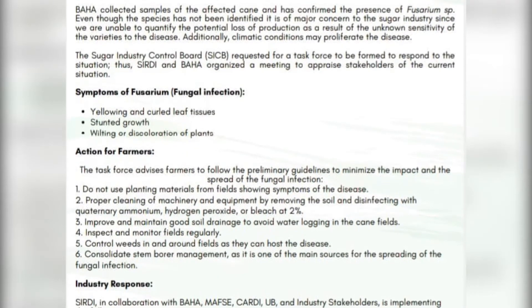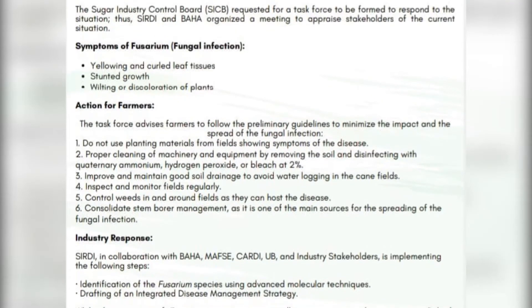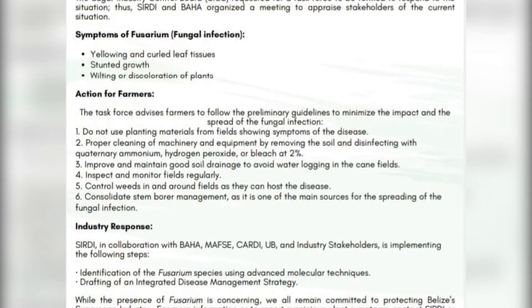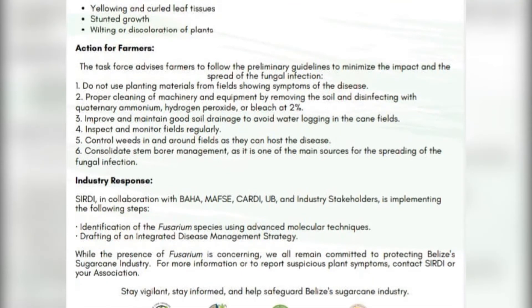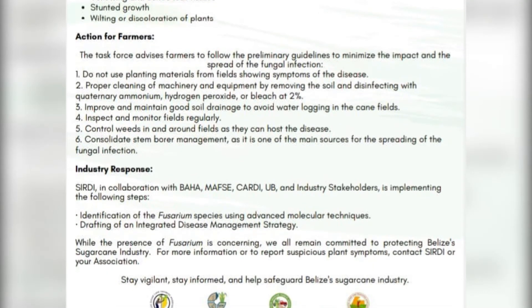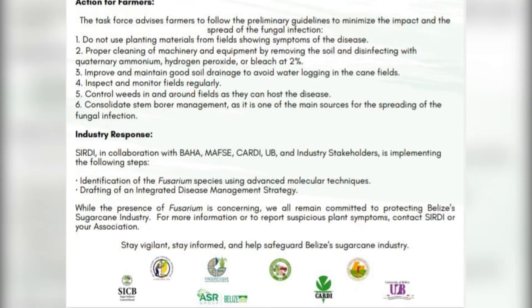What we have seen is that the variety B79/474 makes up more than 60% of the sugar industry. It is susceptible to this fusarium, and we have seen in some areas the mortality of this variety due to the fusarium.